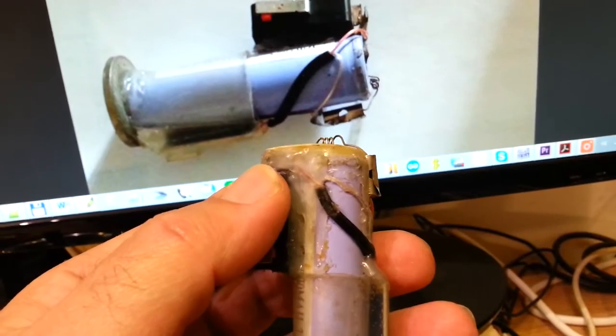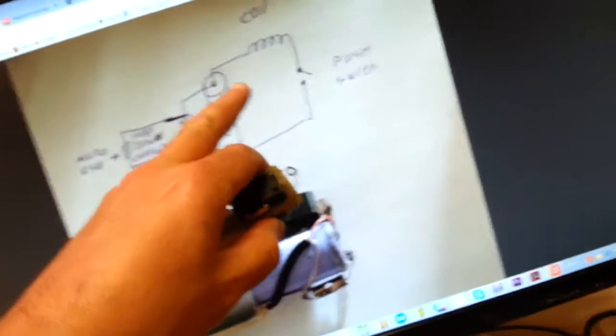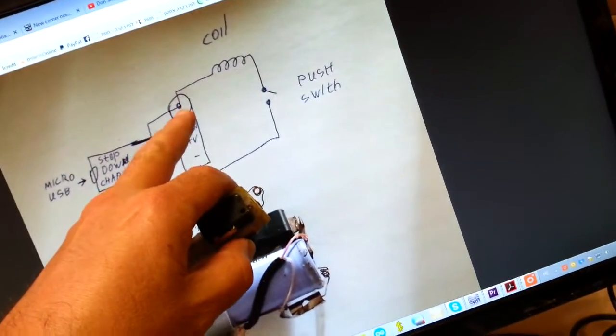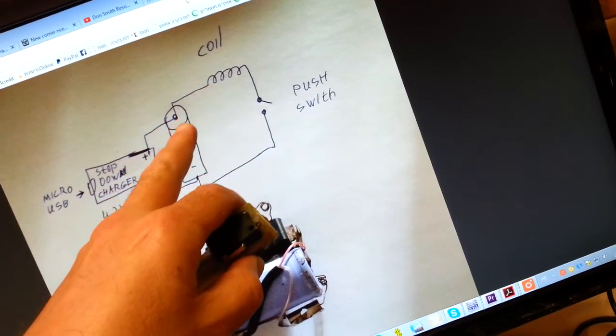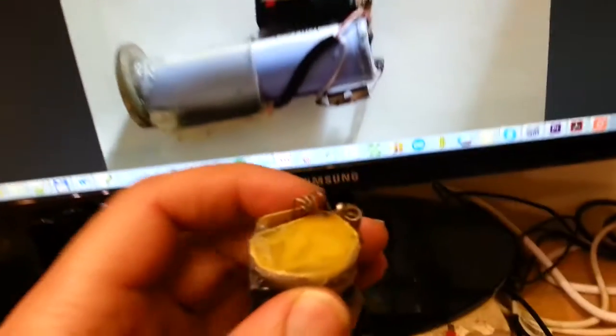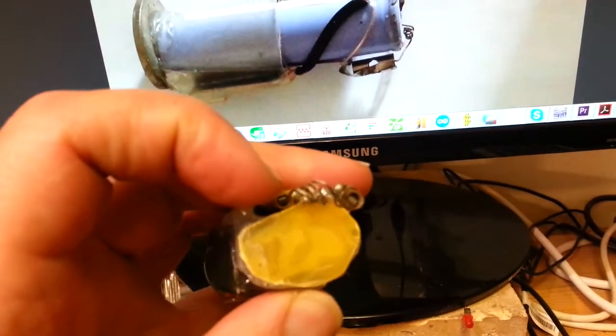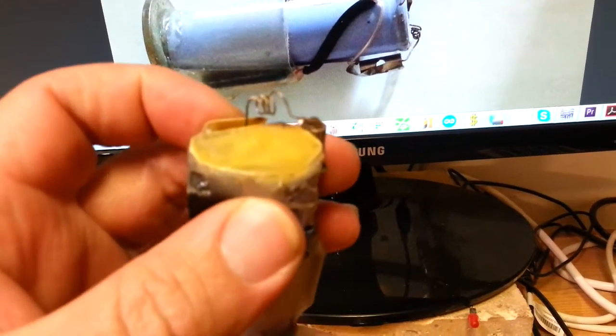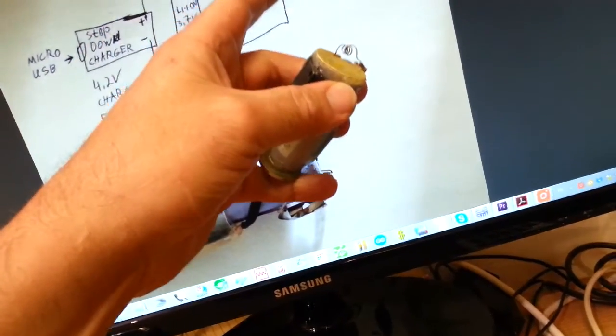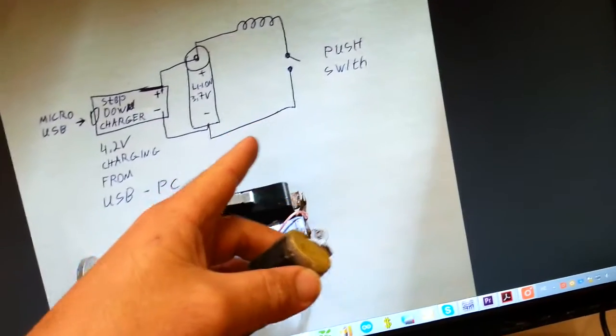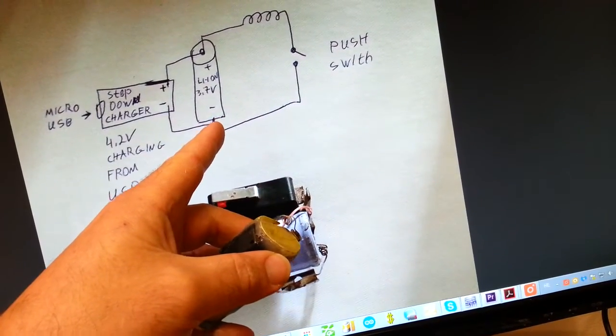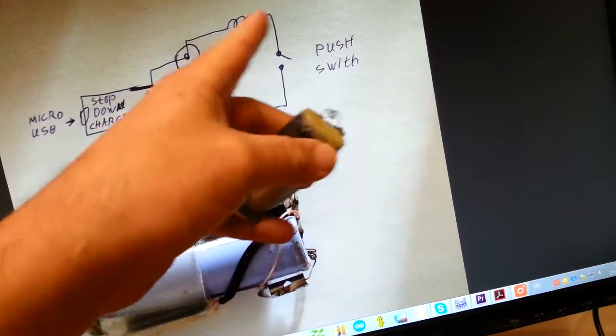And this switch, you connect one to the positive. Sorry, the positive goes to the coil, to this spring, and goes to the switch, and then to the negative. This is one circuit.